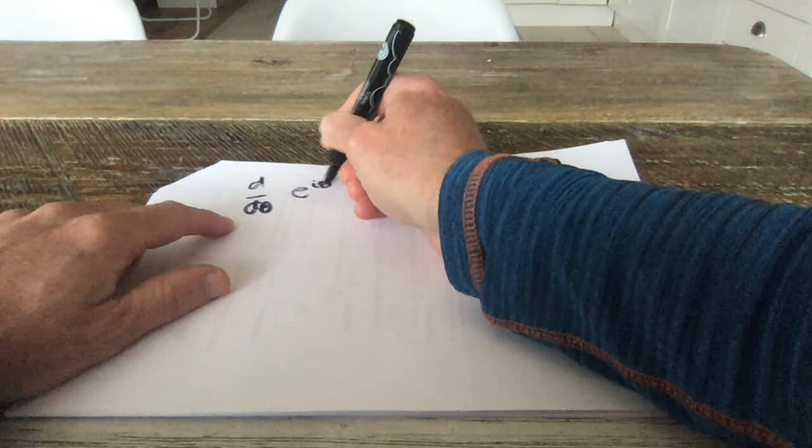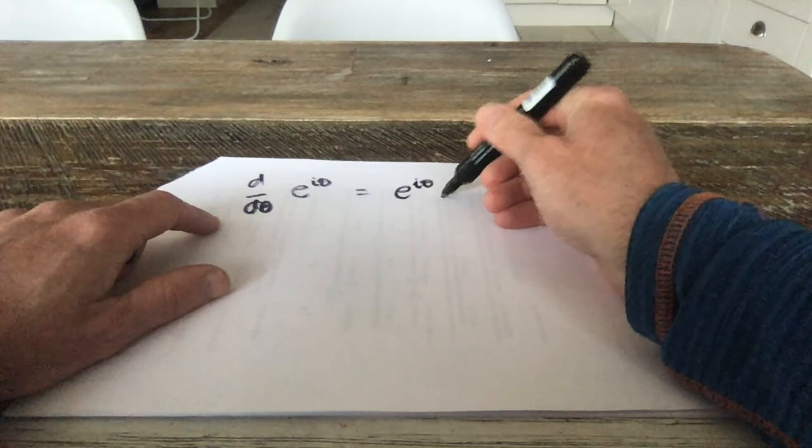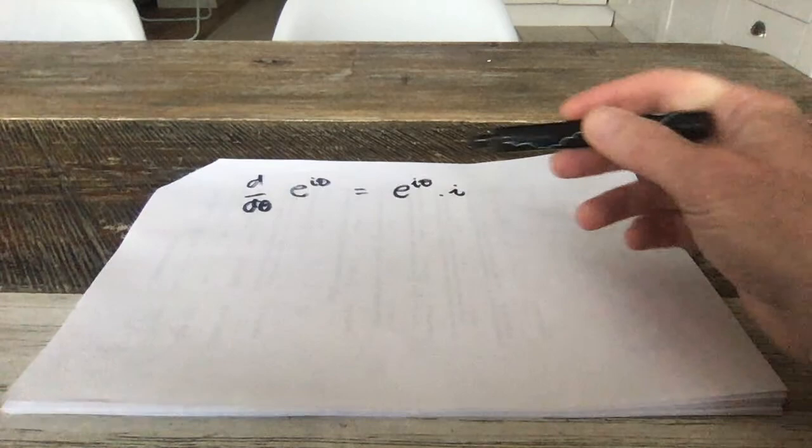Let's look at differentiation. If I have e^(iθ) and I differentiate it, I get e^(iθ) — because differentiating an exponential gives an exponential — but I must also differentiate inside the exponential, and I get i. This is exactly the same as when you differentiate e^(2x) and get e^(2x) times 2.